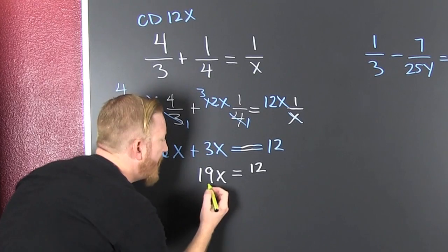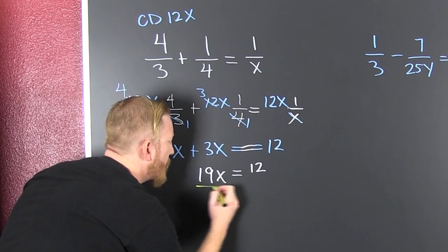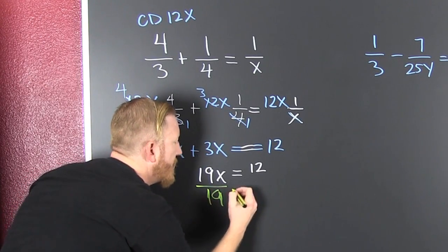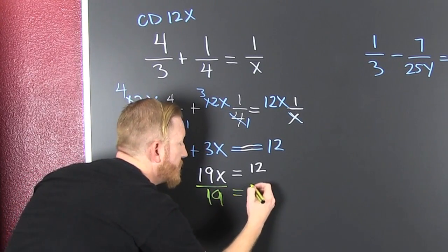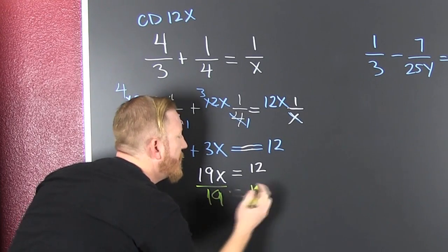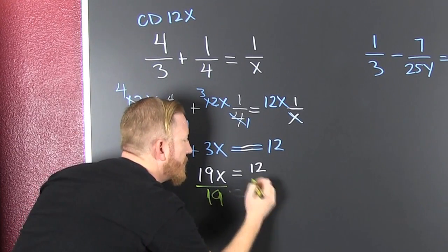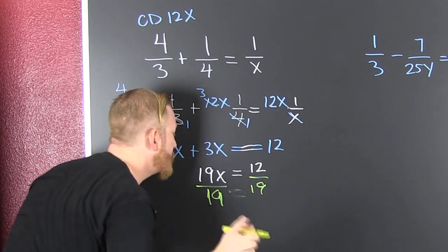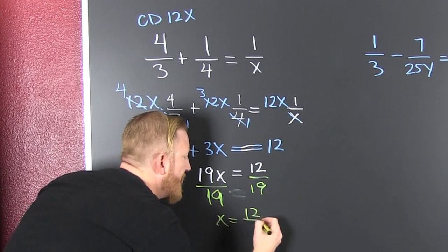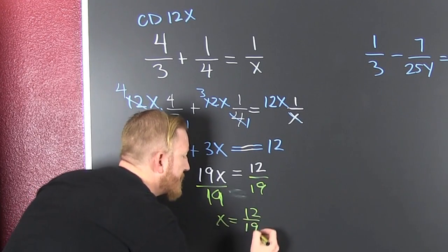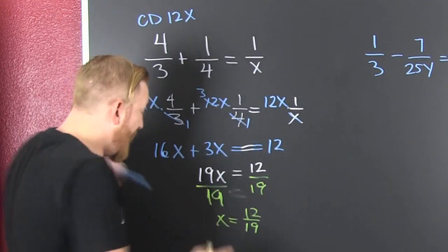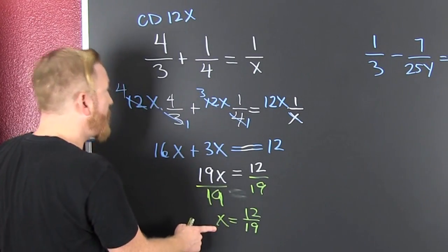Divide both sides by 19. So I divide this side by 19 — and that side too. So x is equal to 12/19. Can the answer be a fraction? It just happened!